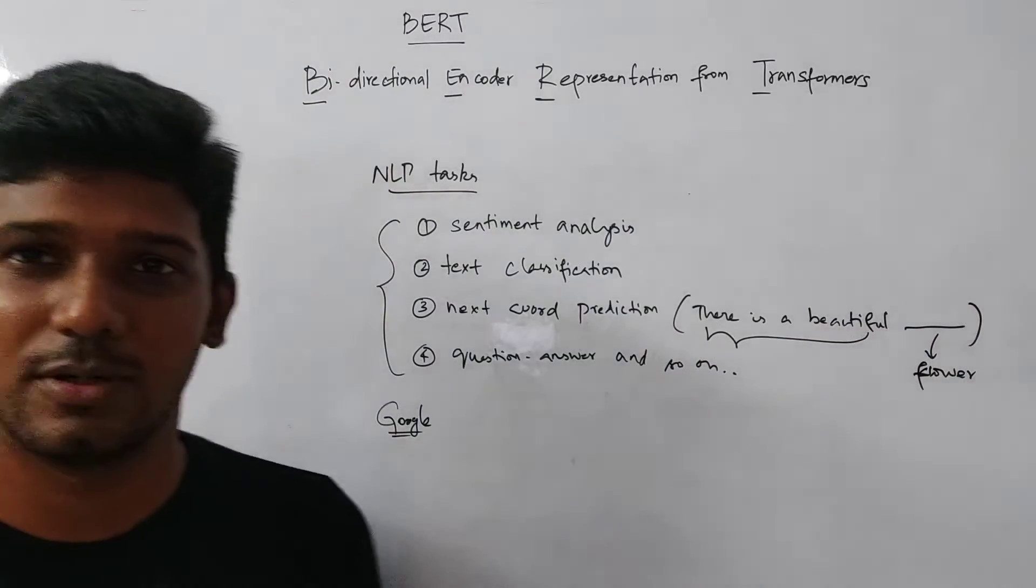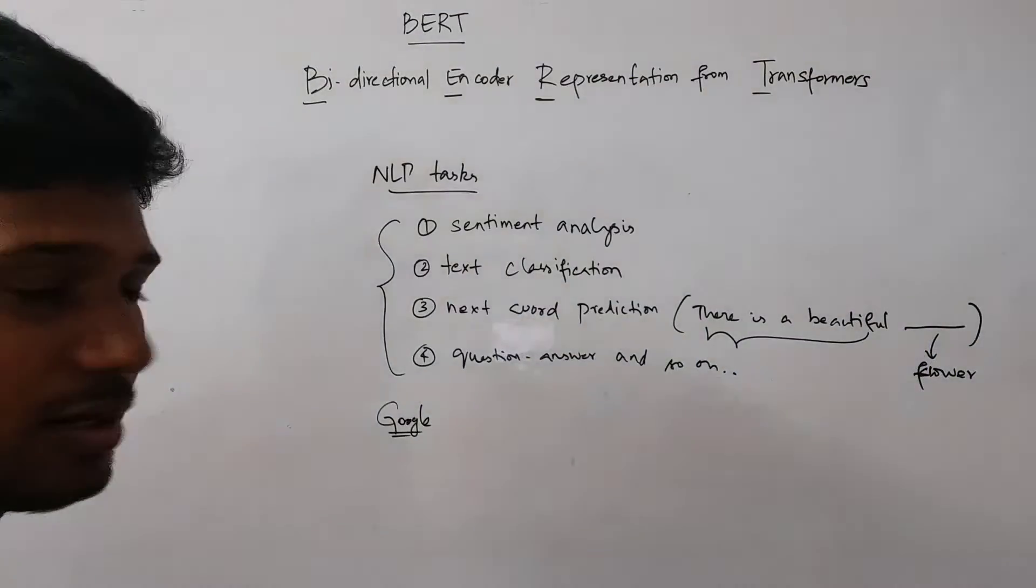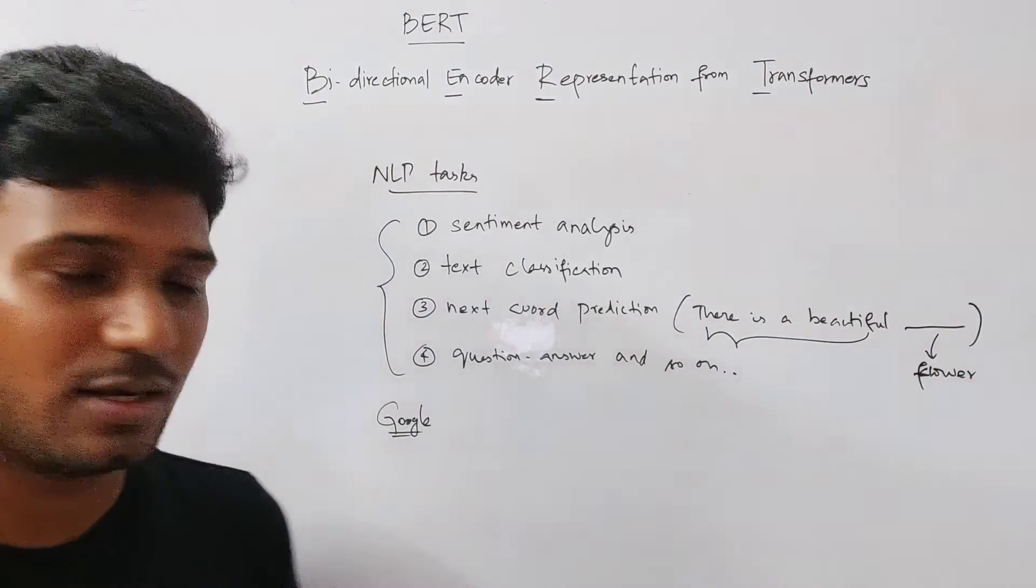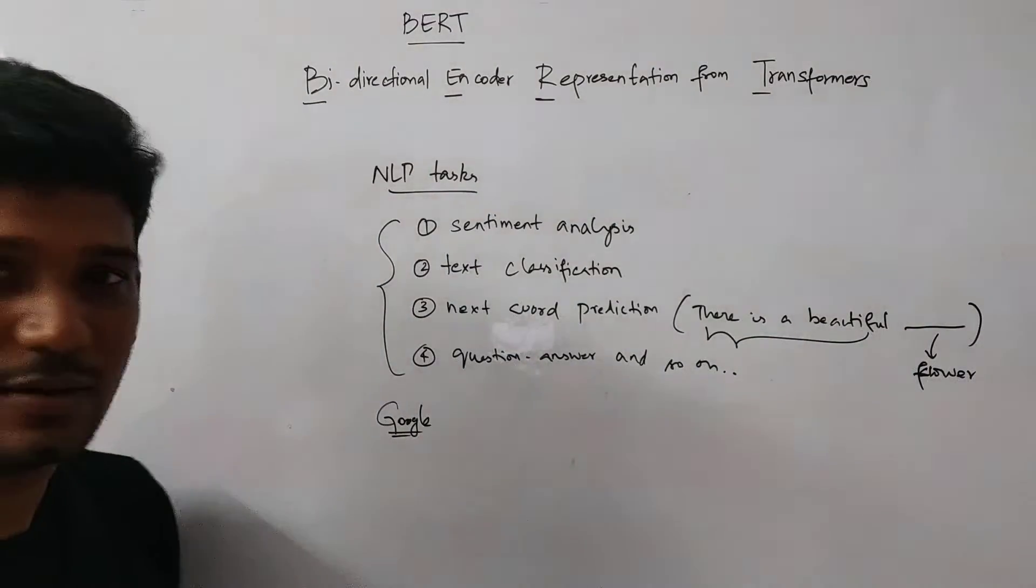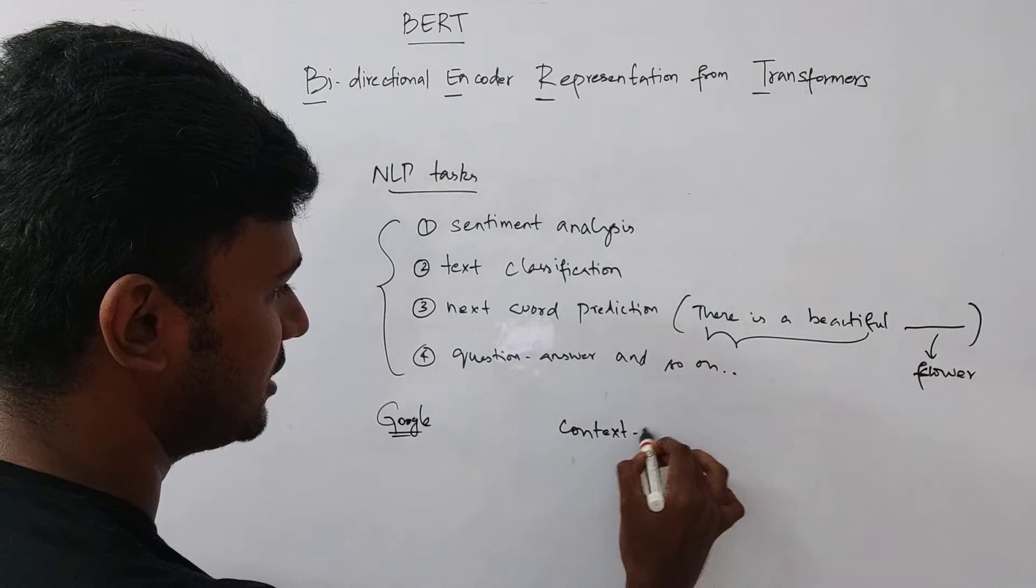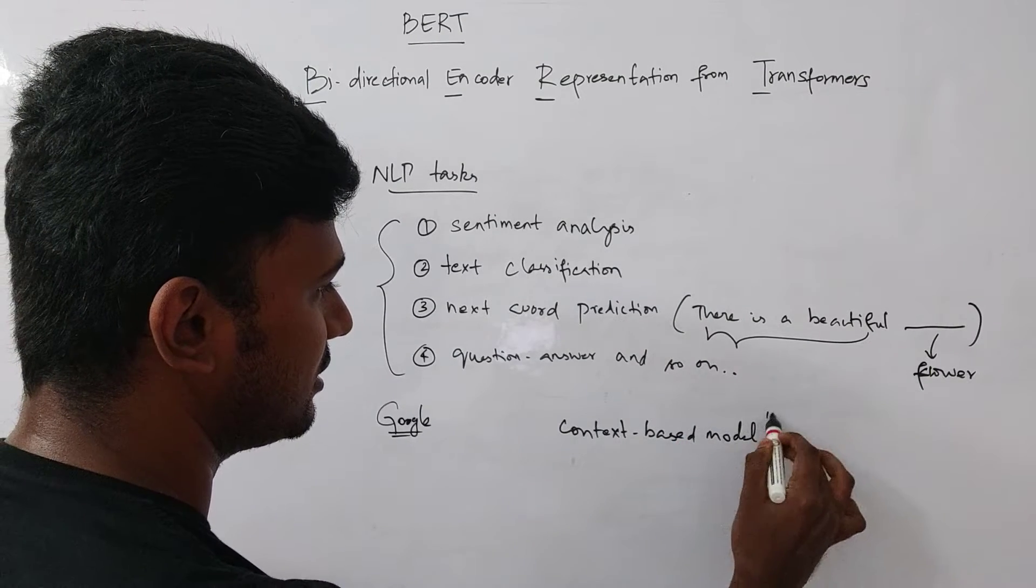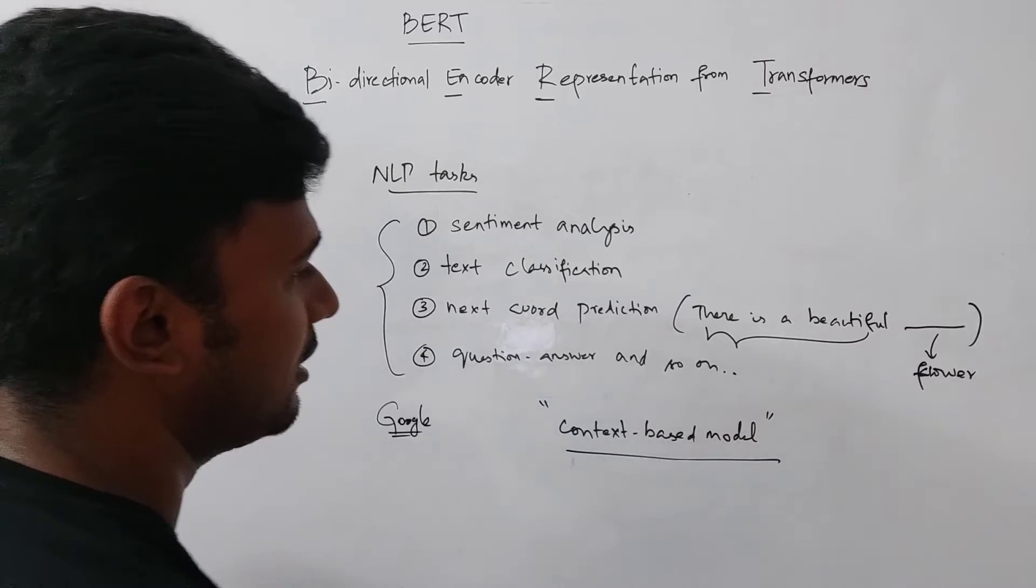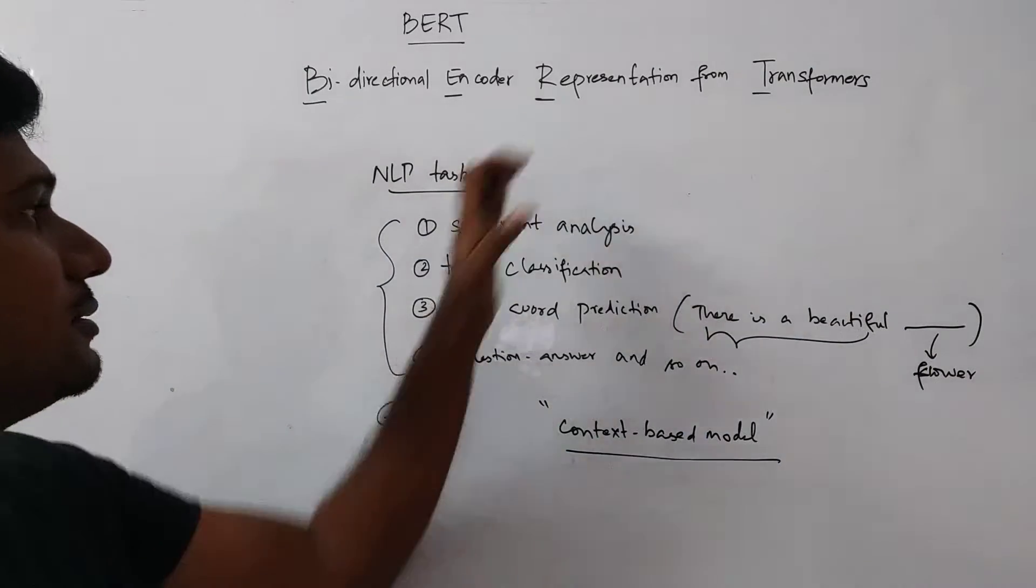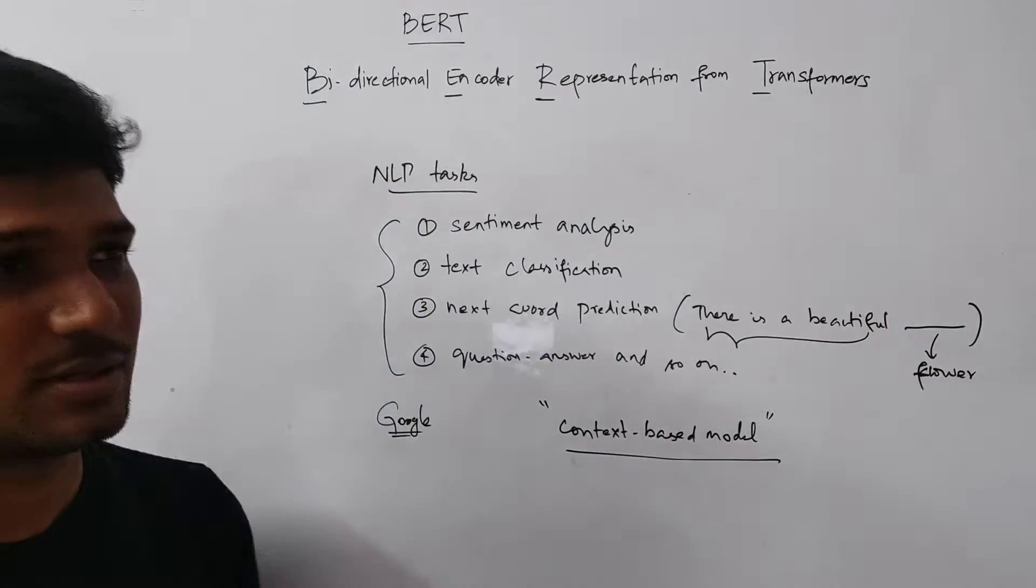So how BERT is able to give phenomenal results for all of these tasks. We will now dive deep and understand how BERT is able to do that. So BERT is basically able to do that with something called as context based model. BERT is a context based model. So because of this phenomenon, BERT is able to give state of the art results to all of these tasks and many more in the NLP world.